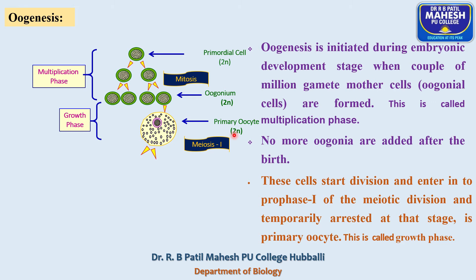Once the primary oocyte is surrounded by a layer of granulosa cells, such differentiated cells are called a primary follicle. In between birth and puberty, the primary follicles are transformed into secondary follicles, which are then transformed into tertiary follicles. After attaining puberty, the tertiary follicles are transformed into Graafian follicles or matured follicles, and within the follicular cells the oogenesis process completes.